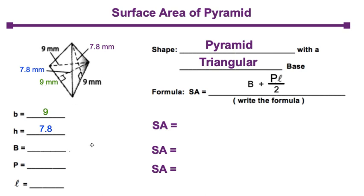Capital B represents the area of the triangle. Hopefully you remember the formula is half times base times height, so you get 35.1. The perimeter of our triangle is 9 plus 9 plus 9, which gets us 27, and our slant height is 7.8 right here.